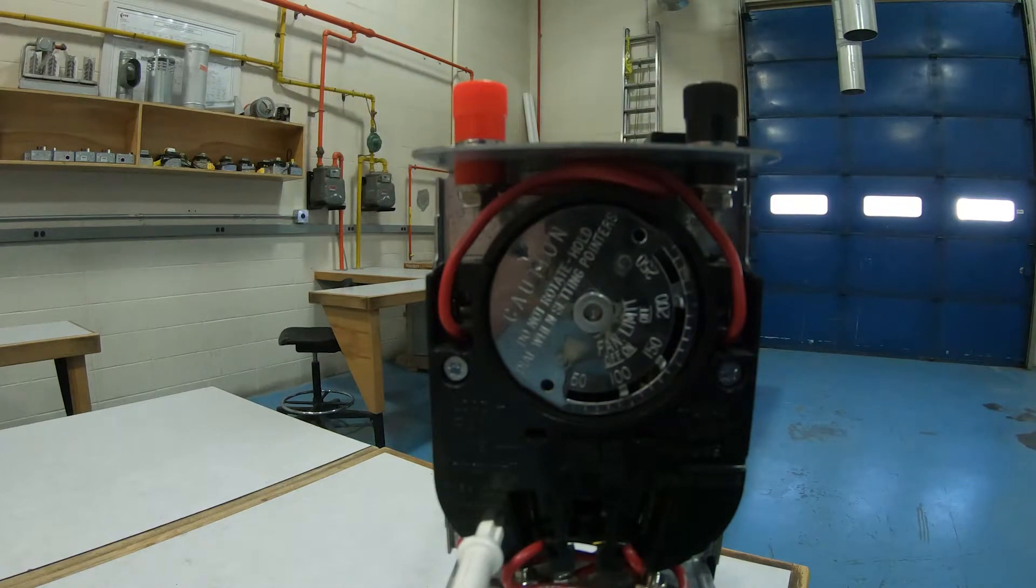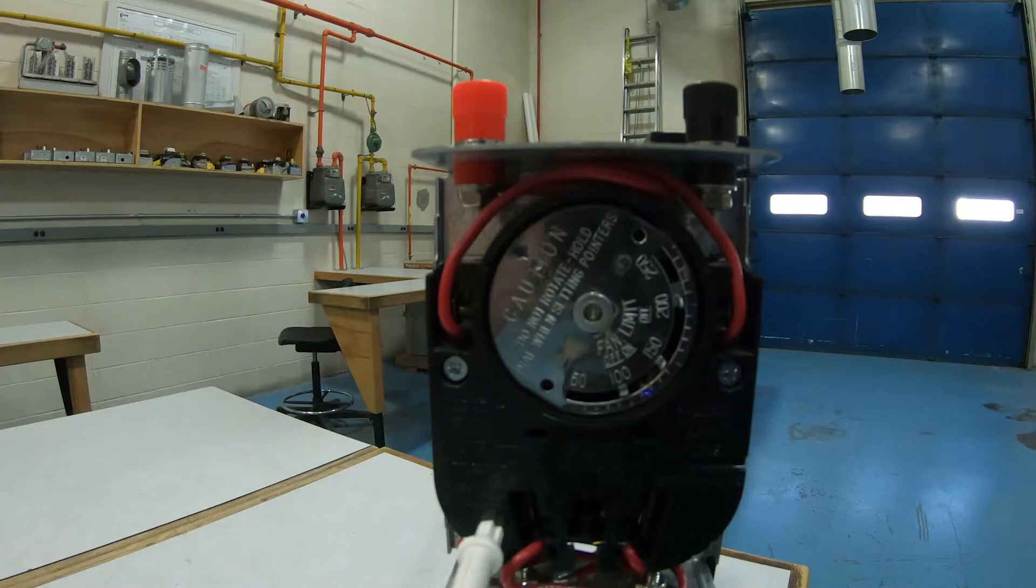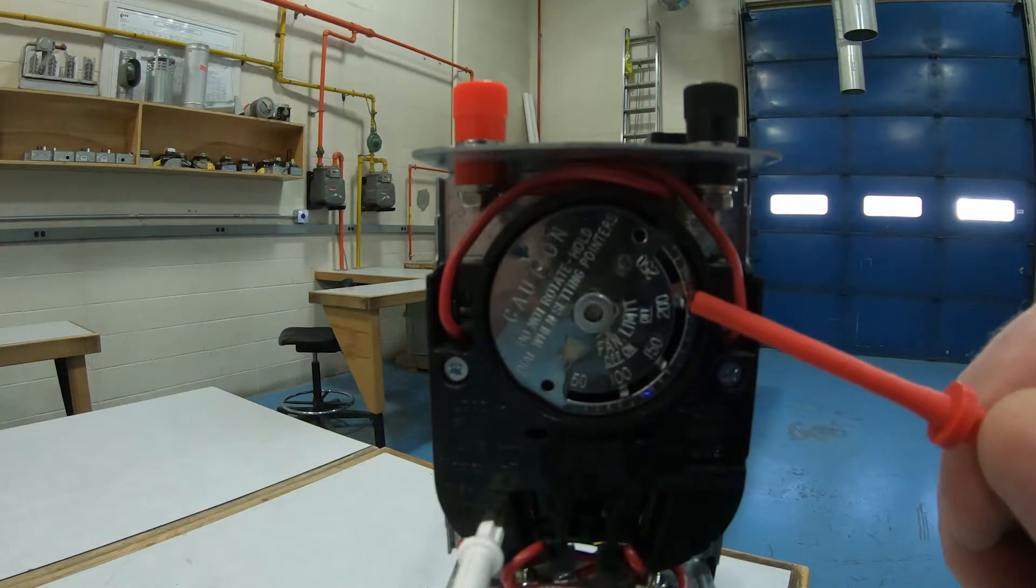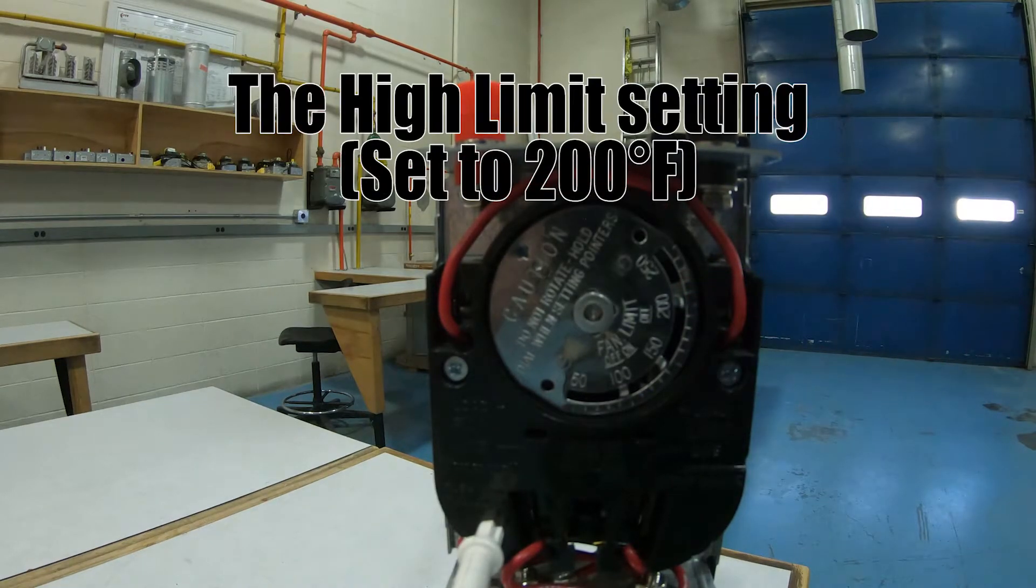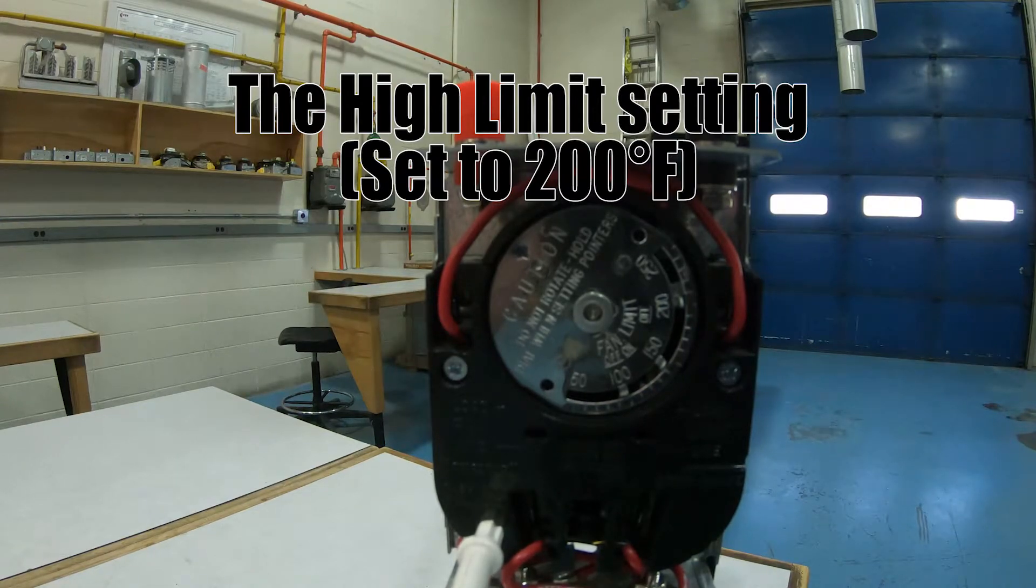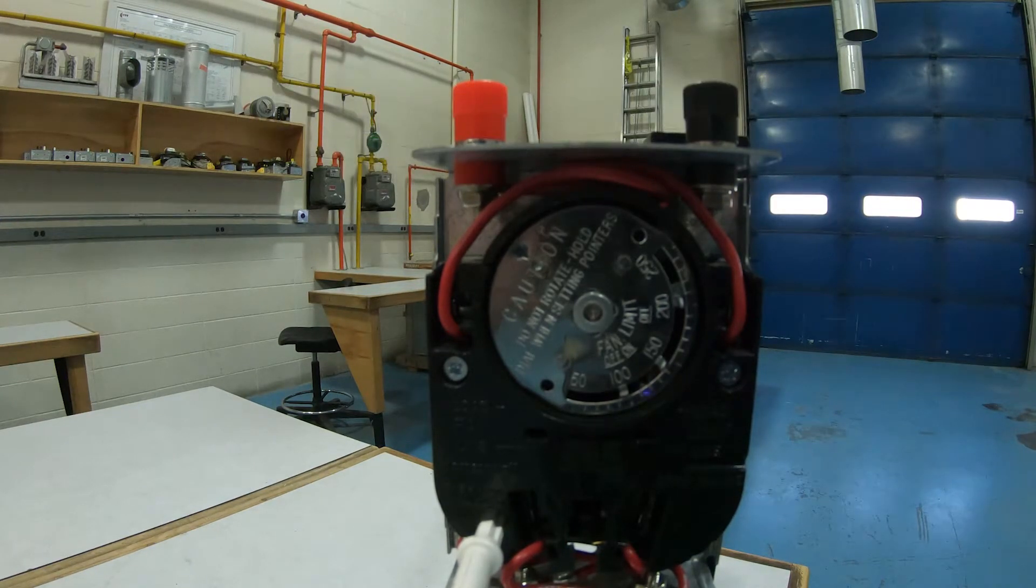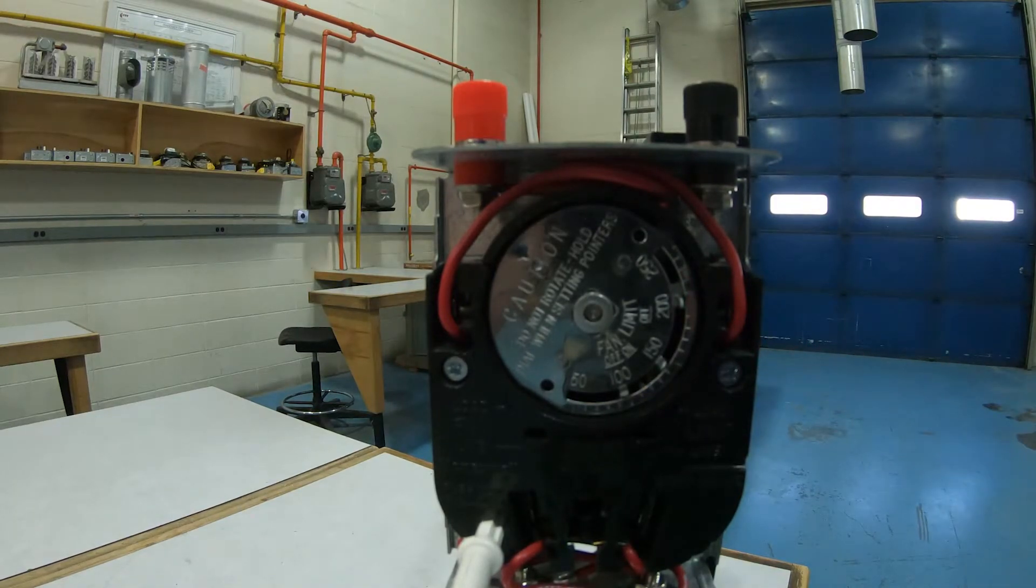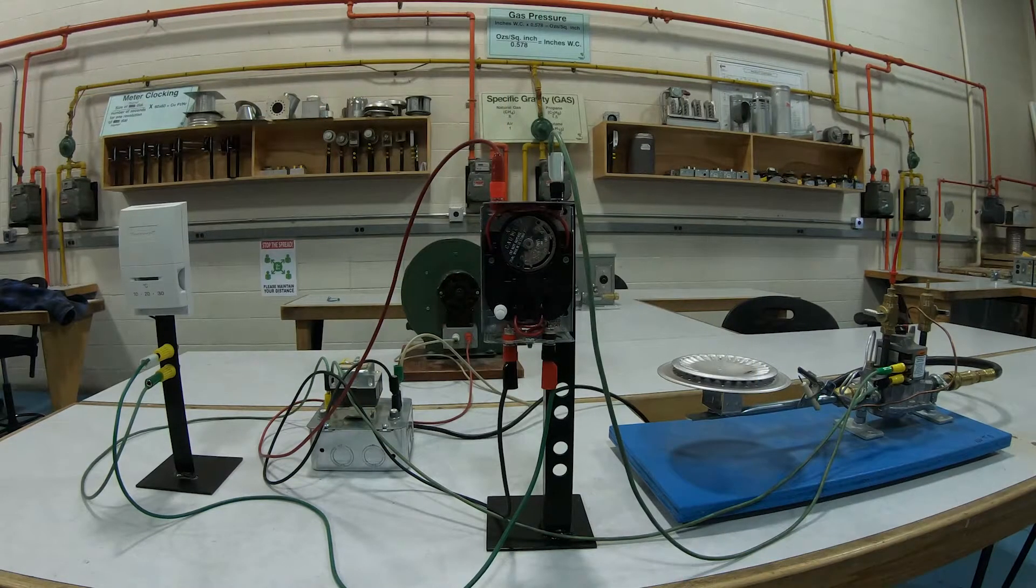If however we have a problem, like the blower motor is not working properly or a plugged filter, when we're heating up we'll get up to my high limit setting, which in this case is 200 degrees Fahrenheit. Main burner shuts off and the fan, if it's working, continues to run to cool down the heat exchanger. And when this gets low enough in its temperature, the burner will kick back on again.